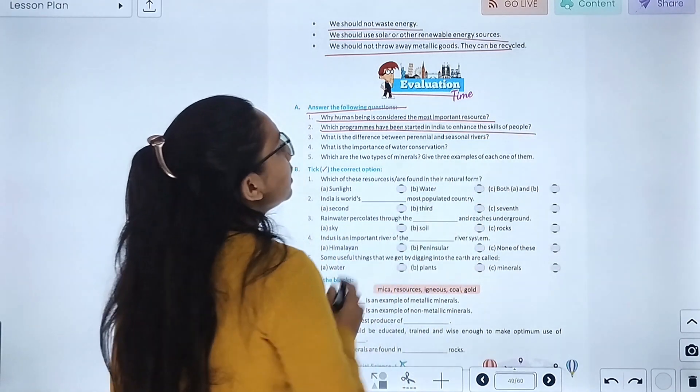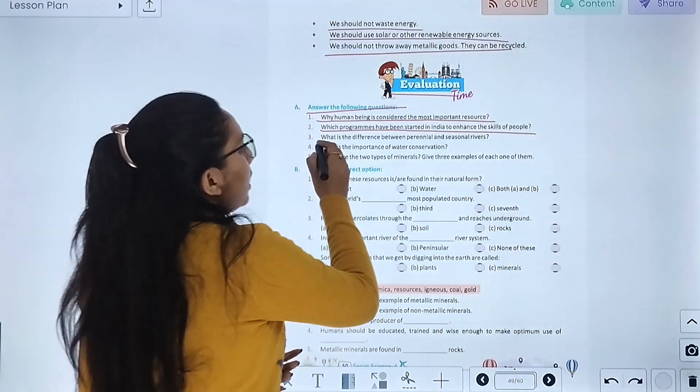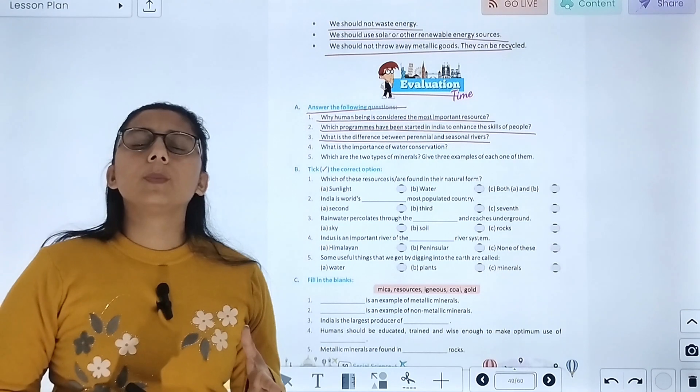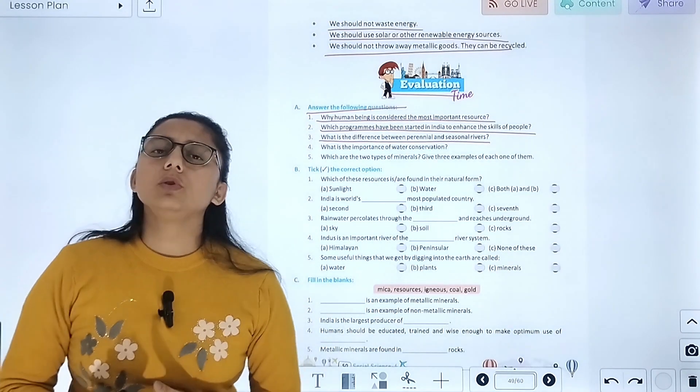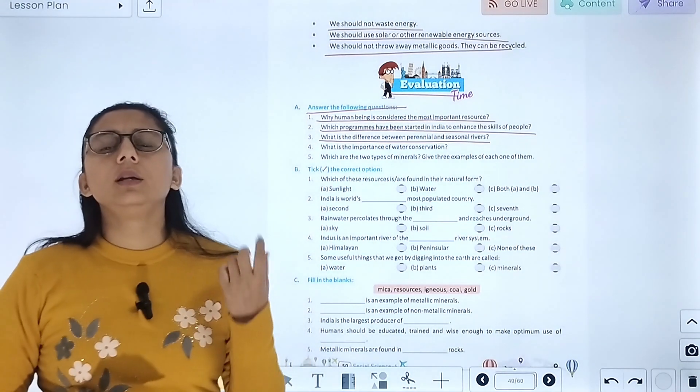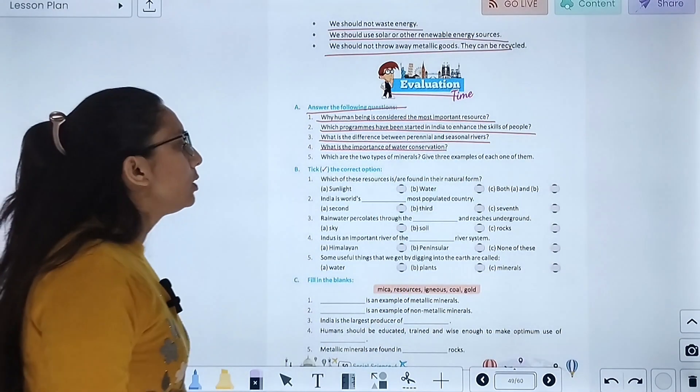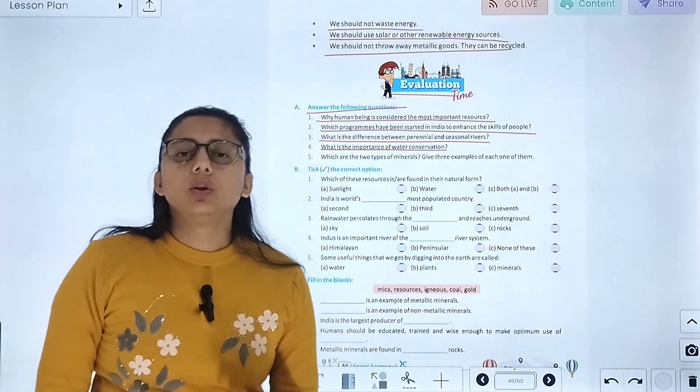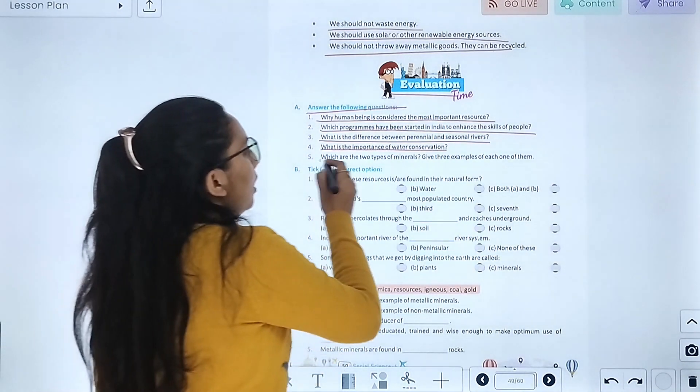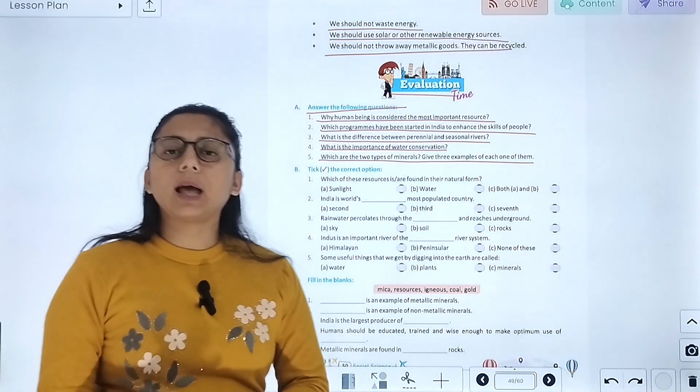Which program has been started in India to enhance the skills of people? Skill development program. What is the difference between perennial and seasonal rivers? Perennial rivers originate from the Himalayas and have water throughout the year. Seasonal rivers have water only during the rainy season. What is the importance of water conservation? To use water efficiently and for future generations. Which are the two types of minerals? Metallic and non-metallic.